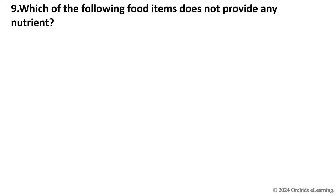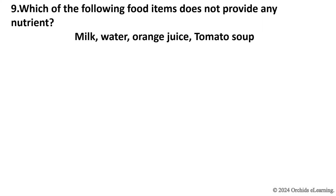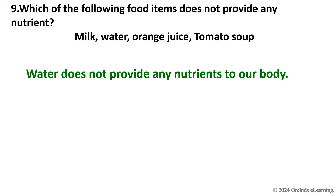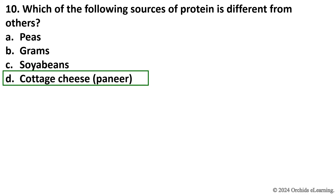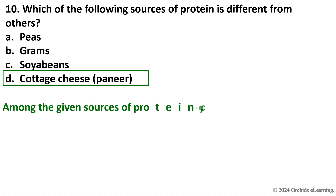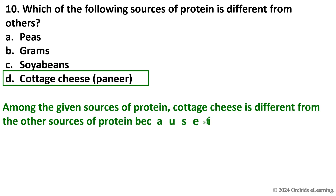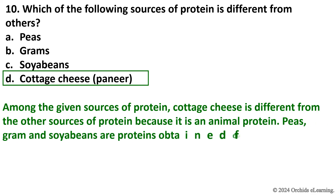Which of the following sources of protein is different from others? Cottage cheese (paneer). Among the given sources of protein, cottage cheese is different from the other sources because it is an animal protein, whereas peas, gram, and soybeans are proteins obtained from plants.